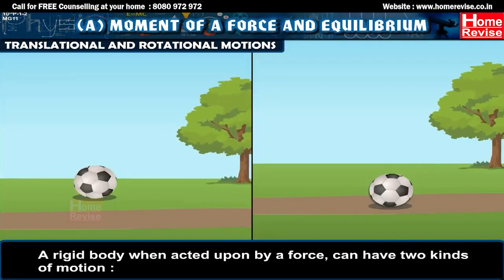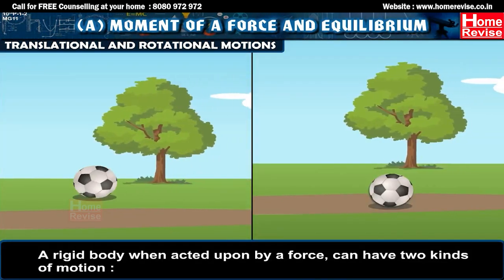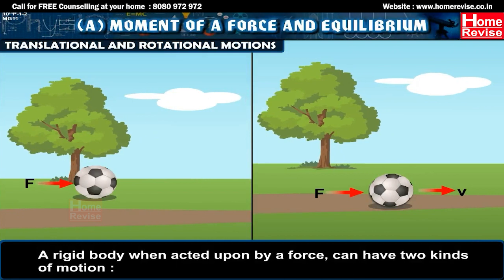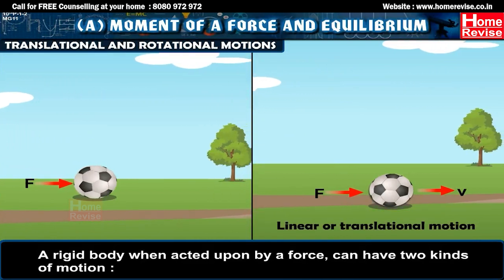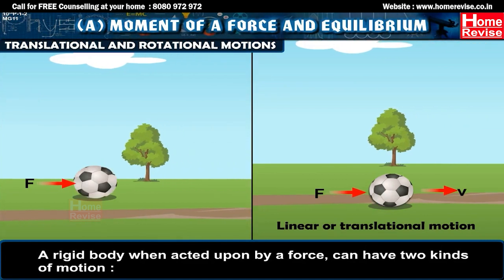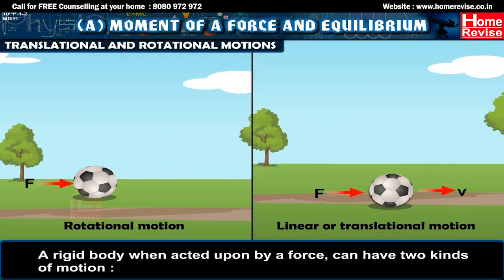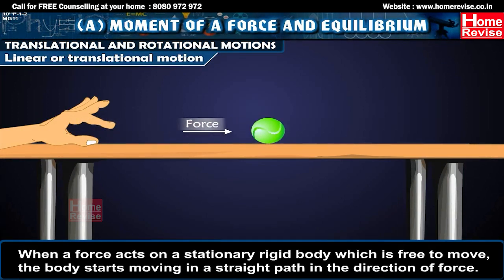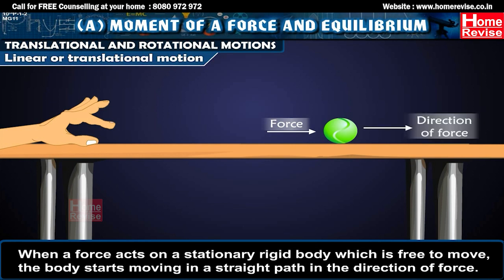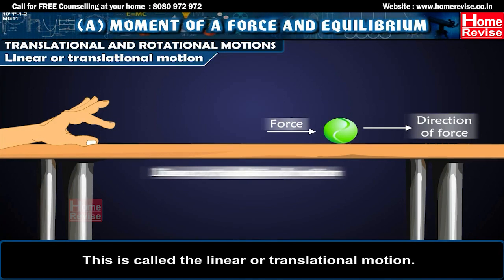A rigid body, when acted upon by a force, can have two kinds of motion. When a force acts on a stationary rigid body which is free to move, the body starts moving in a straight path in the direction of force. This is called the linear or translational motion.